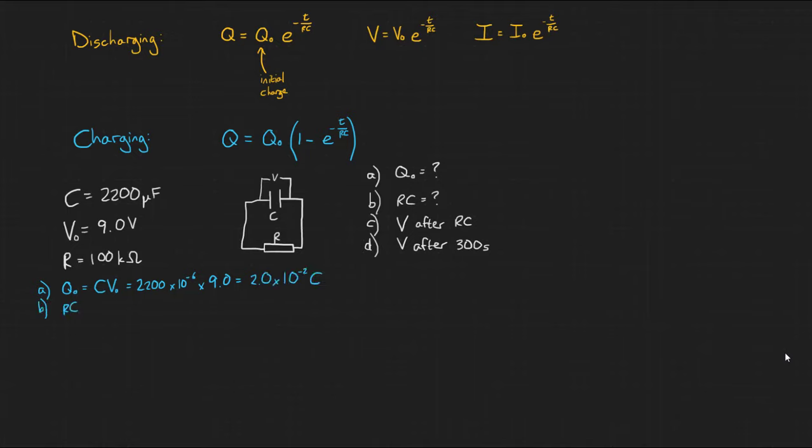Part B, the time constant, well that's simply calculated by multiplying R and C together, and that gives us 220 seconds.